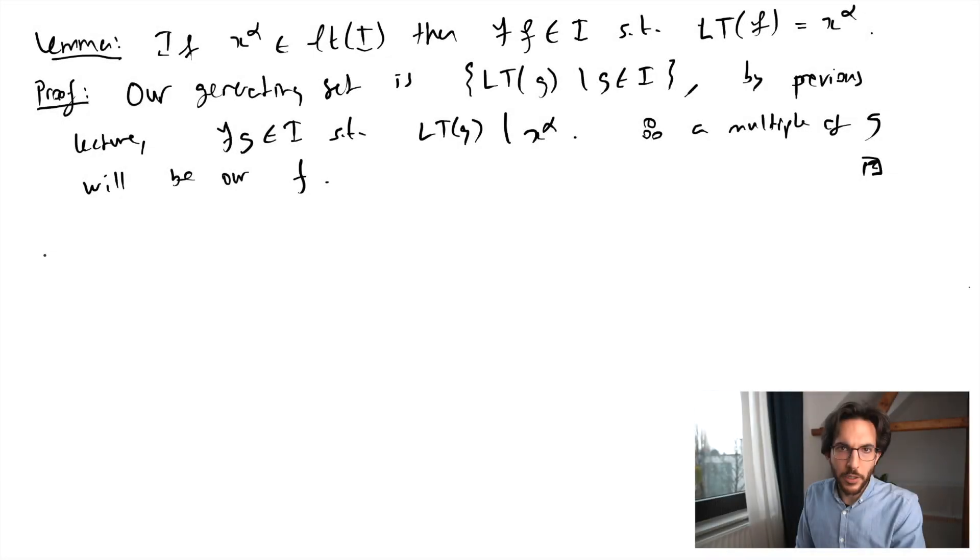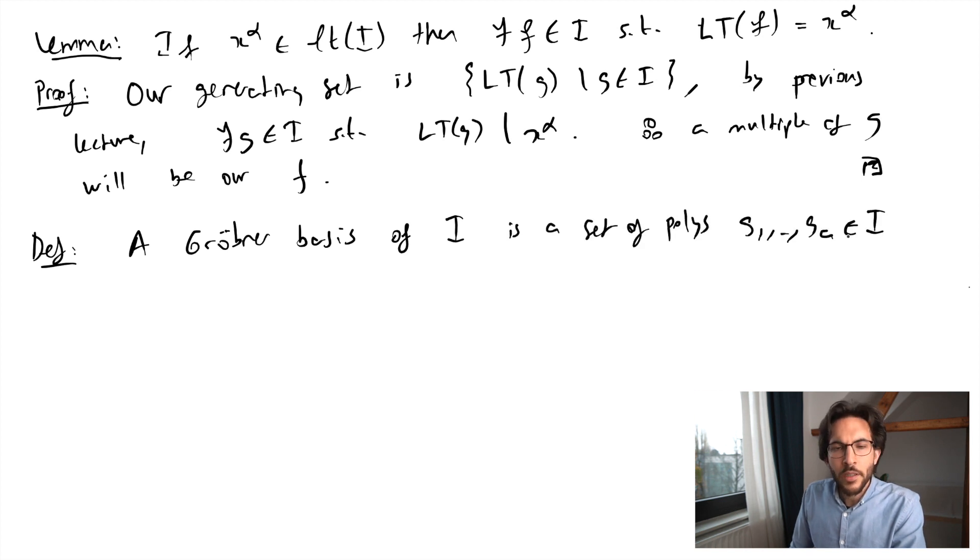So in particular, this observation allows us to make the following definition. We say a Gröbner basis for the ideal i is a bunch of polynomials in the ideal such that their leading terms generate the ideal of leading terms.